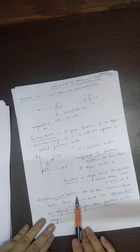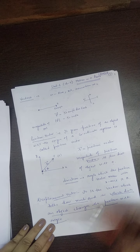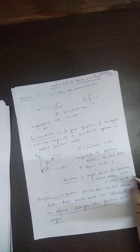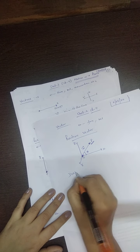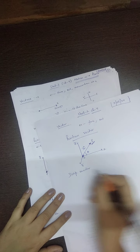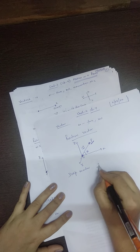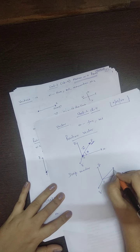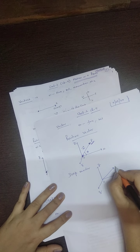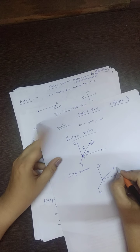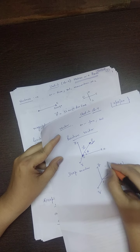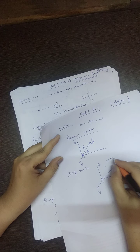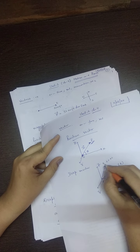Now the next is displacement vector. What do you mean by displacement? All of you know it is the shortest distance covered by the object in a given time interval. If a particle is moving in a plane — this is x-axis, y-axis, z-axis — at any instant the position of particle is A at time t. After time t plus delta t, its position is B. So AB is the displacement vector.